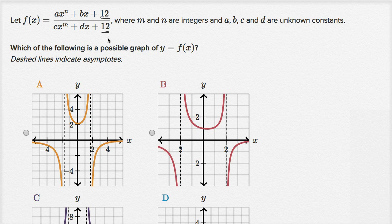But just this 12 sitting here does tell us one thing. What happens when x equals zero? Because when x equals zero, every other term in this rational expression is just going to be equal to zero. And so we can figure out f of zero.